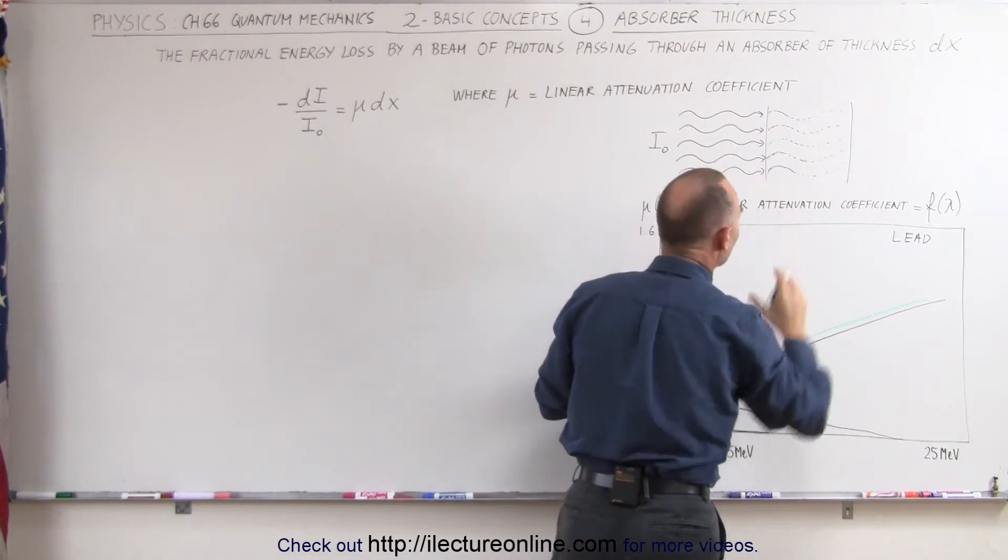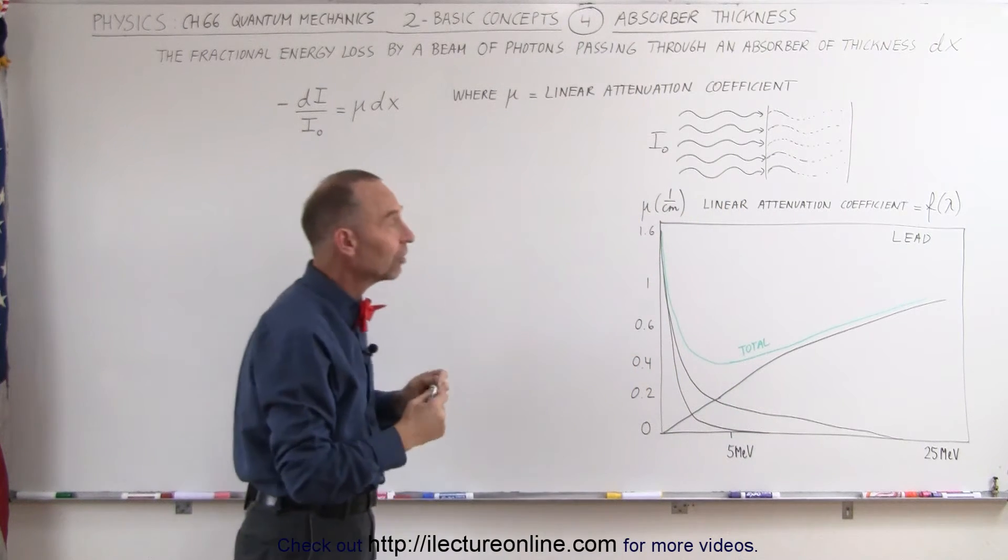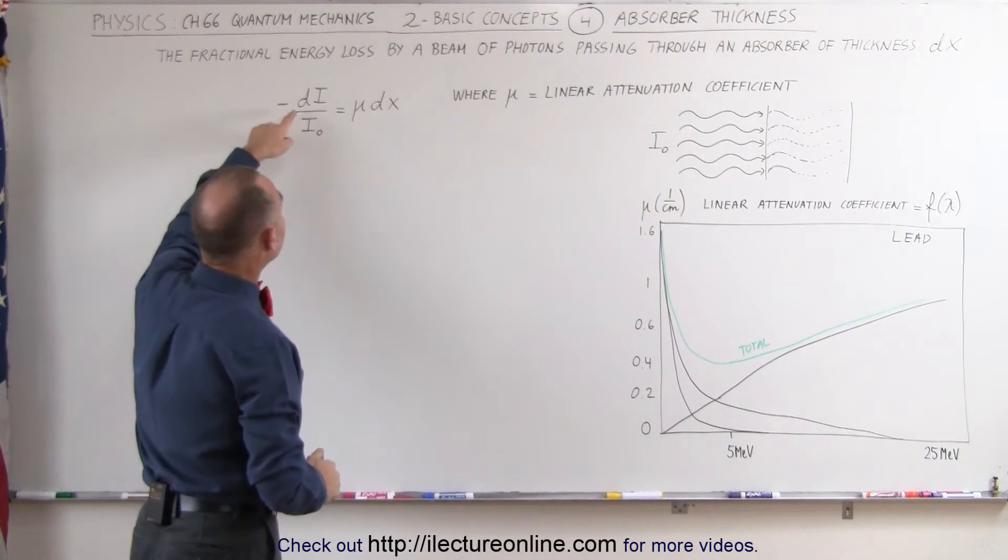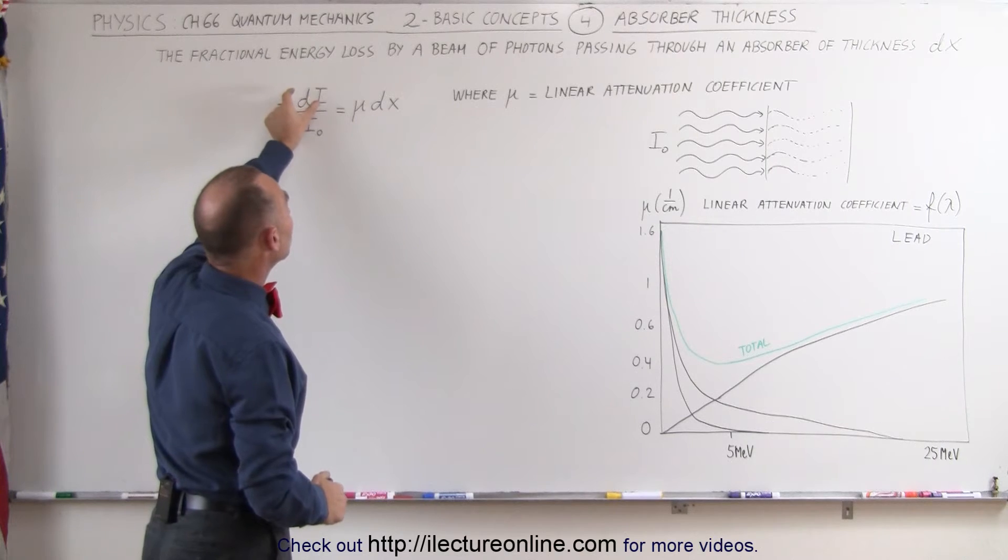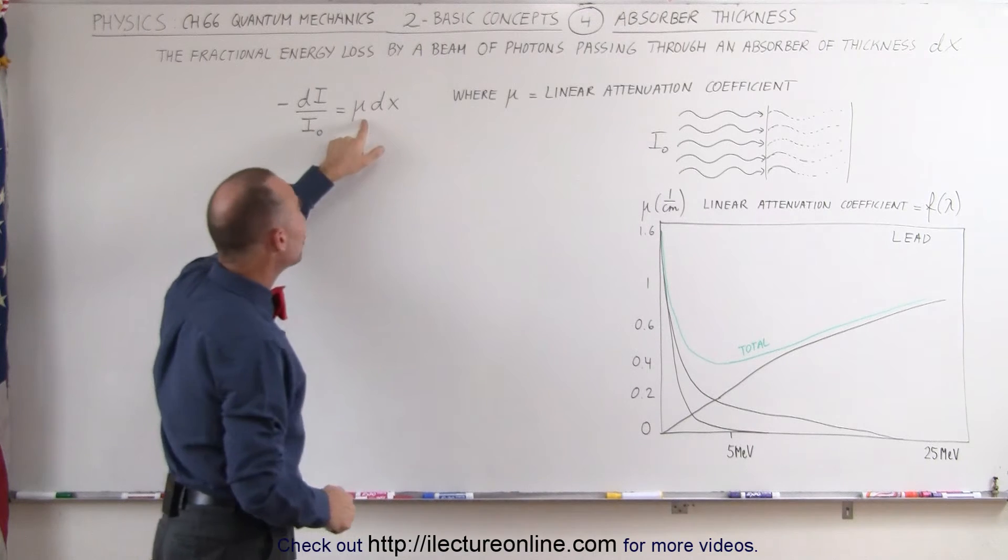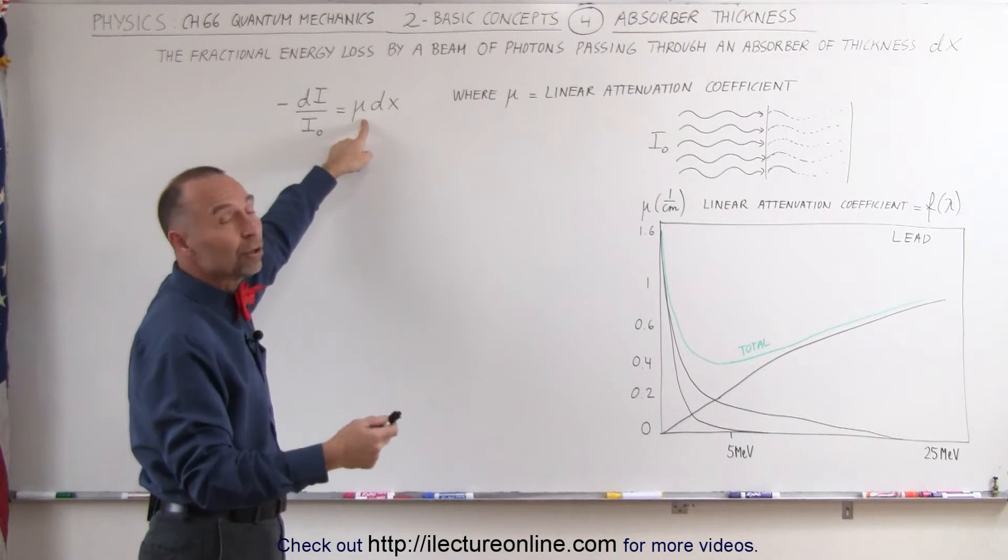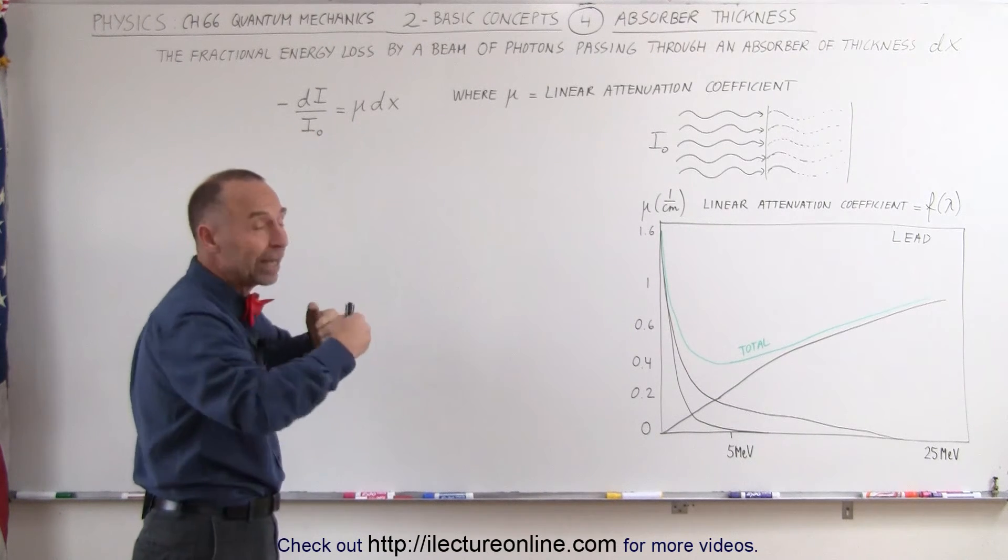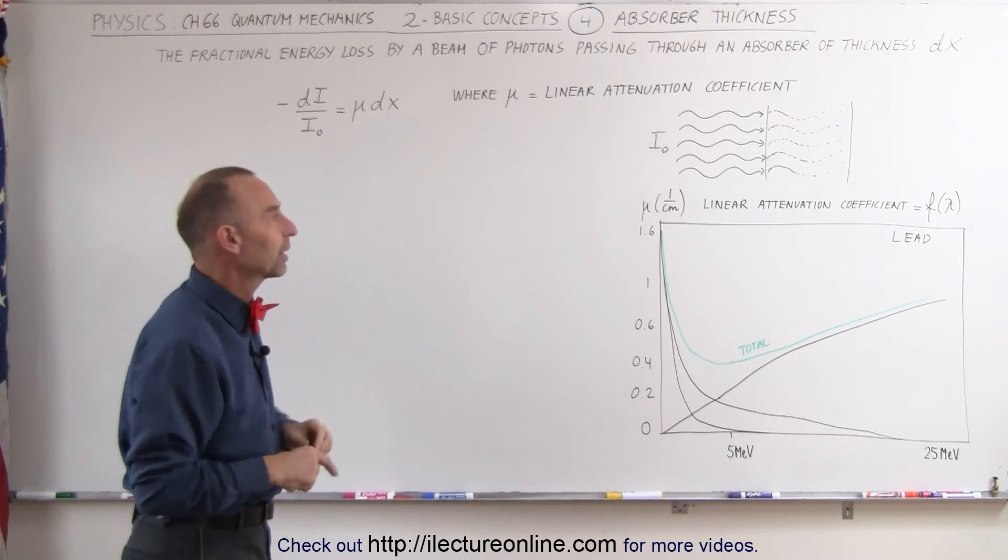the energy will slowly be absorbed through the various mechanisms. dI is the small amount of change in the intensity and dx is the small amount of distance we go into the material. μ represents the linear attenuation coefficient. The bigger μ is, the more energy gets absorbed for a particular thickness.